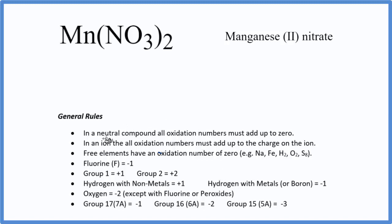So in a neutral compound, that's one where we don't have a plus or a minus sign out here, everything adds up to zero, all the oxidation numbers. This is a neutral compound, so everything's going to add up to zero. We also know if we have an ion, all the oxidation numbers have to add up to the charge of the ion.